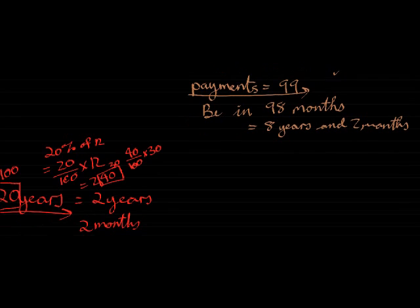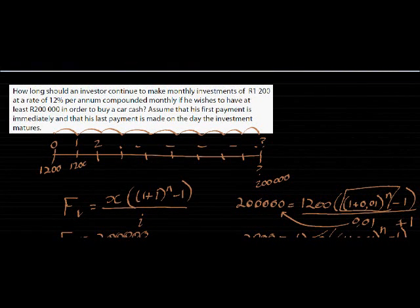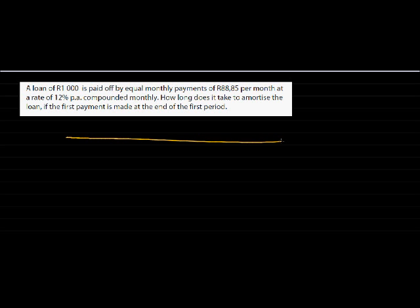Peace. Show yourself smart. I think you're asking for more. So let's give it to you. One more. A loan of 1,000 Rand is paid off by equal payments of 88 Rand and 85 cents per month at a rate of 12% per annum compounded monthly. How long does it take to amortize the loan if the first payment is made at the end of the first period? So they didn't tell, at the end of the first period, they don't tell us how long it is, only that initially the loan that was awarded was 1,000 Rand.